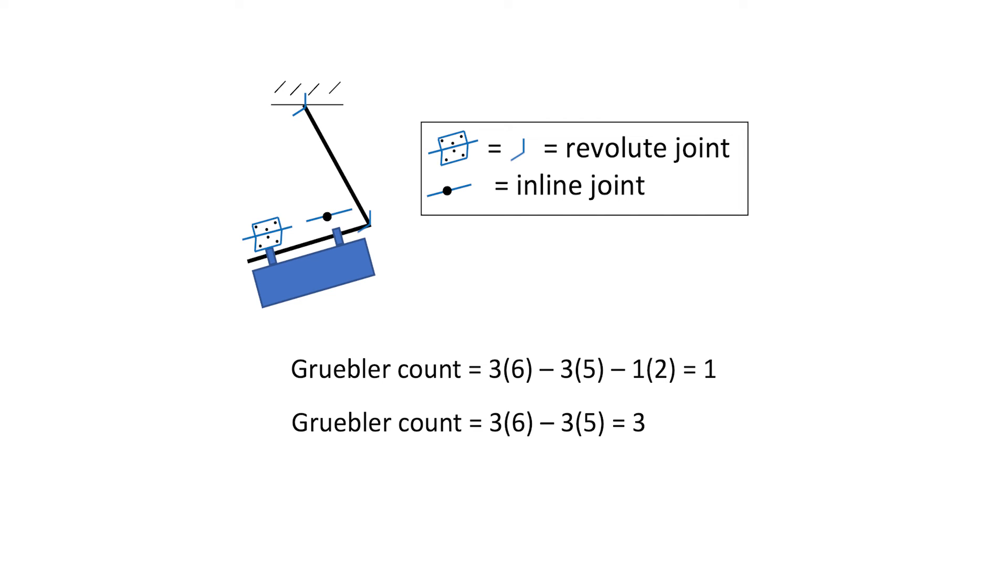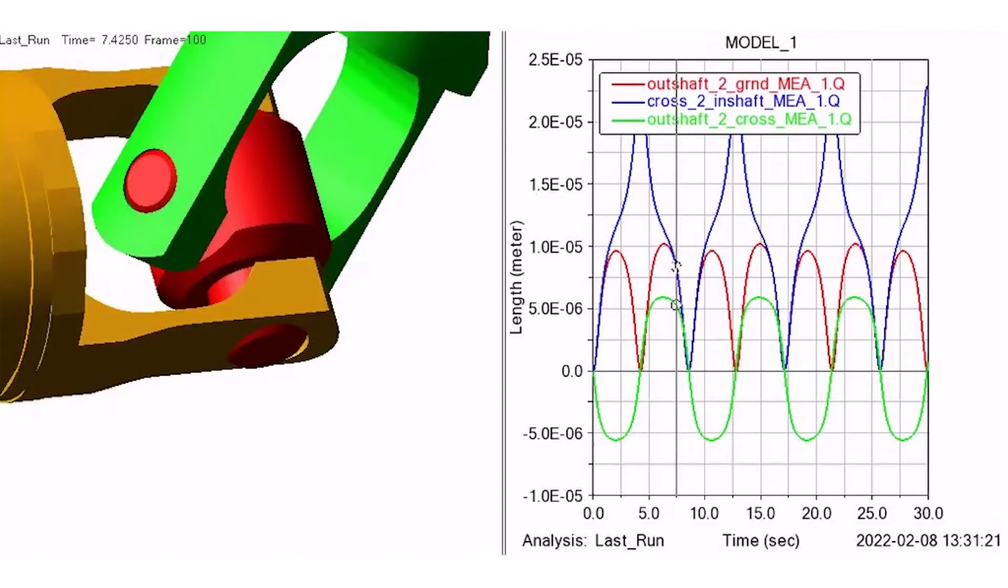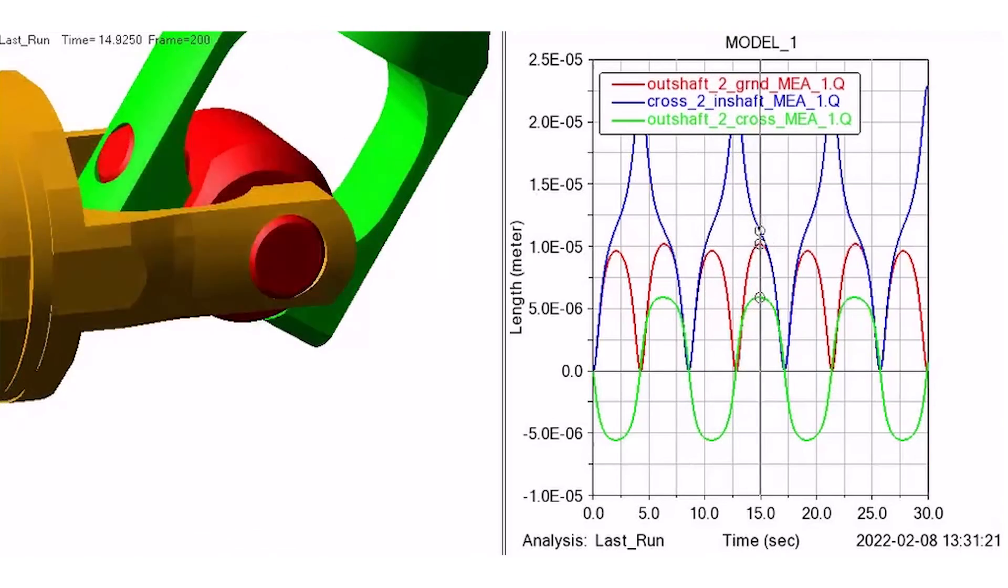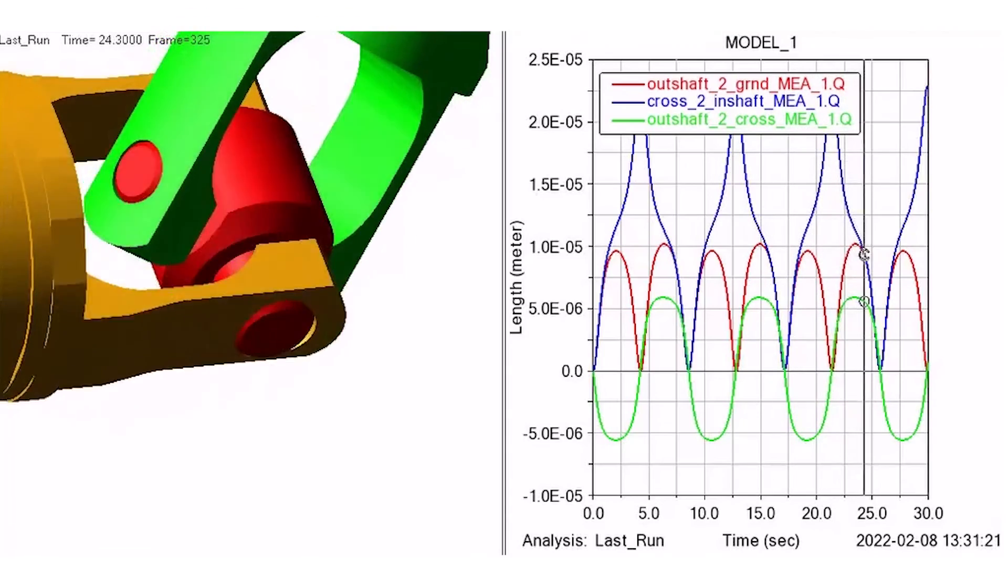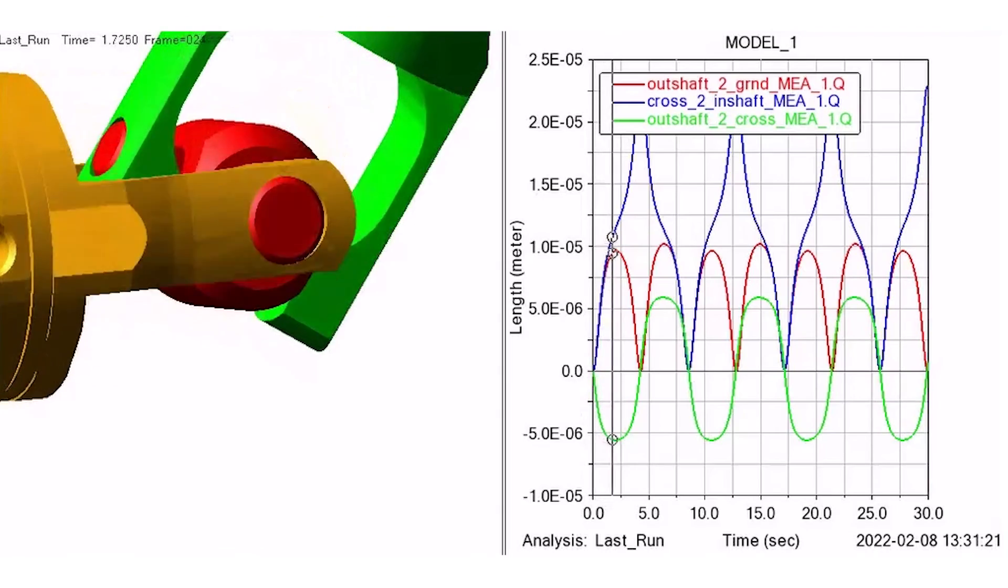Now let's get back to the hook joint. In order to make the system non-redundant, we need to change all three revolute joints to cylindrical joints. A cylindrical joint allows rotation about one axis like a revolute joint, but it also allows translation along the rotational axis.